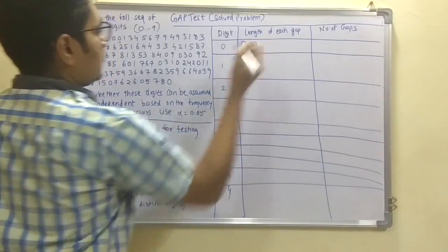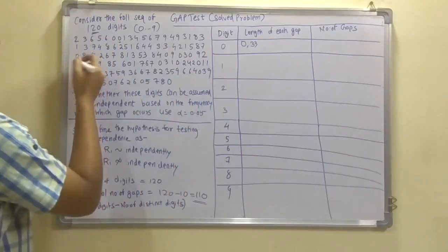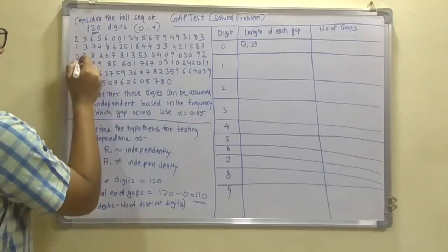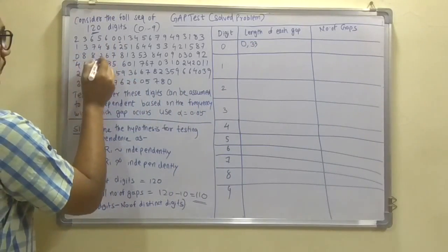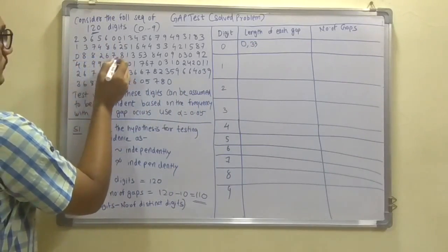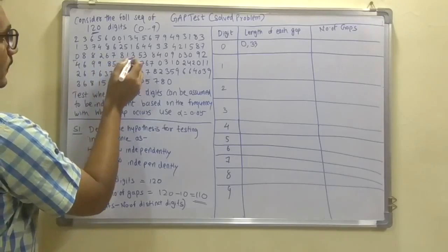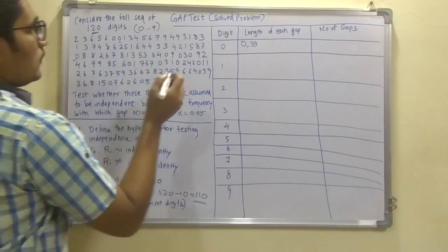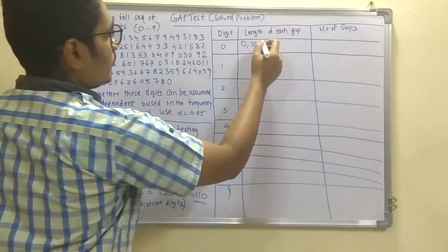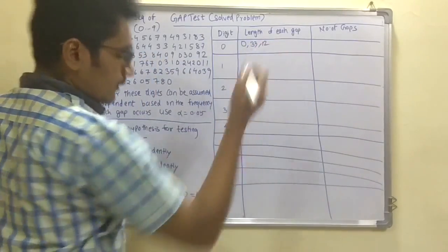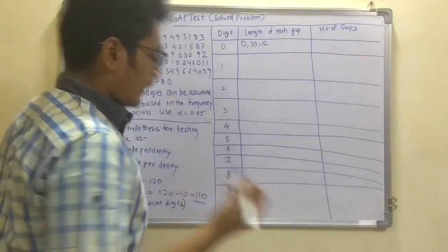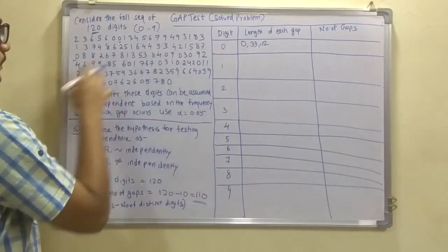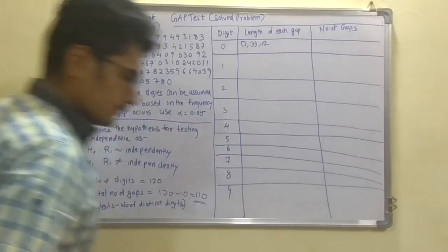After that 0, counting to the next 0 gives a gap of 12. Likewise you have to calculate for each occurrence of digit 0.